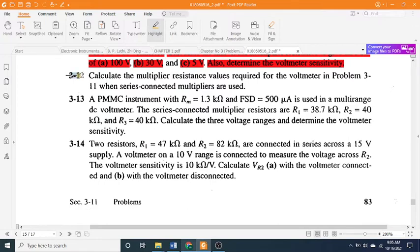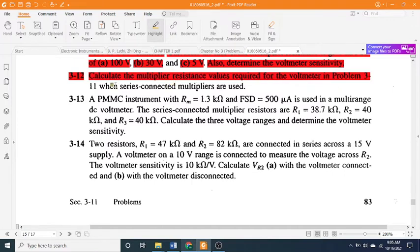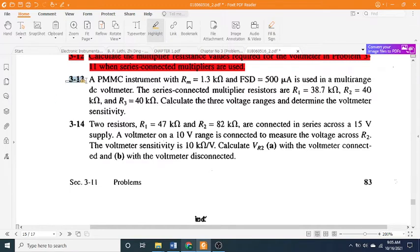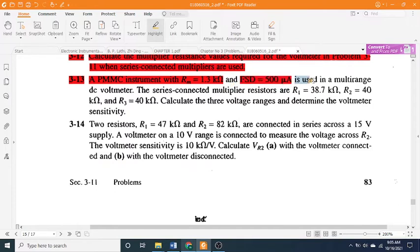3-12: Calculate the multiplier resistance values required for the voltmeter in Problem 3-11 when series-connected multipliers are used. 3-13: A PMMC instrument with Rm = 1.3 kΩ and FSD = 500 μA is used in a multi-range DC voltmeter.